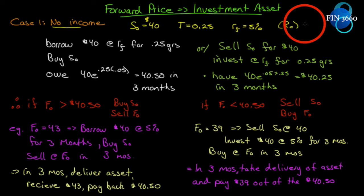We're setting up an arbitrage argument. With arbitrage, we borrow on one side and buy on another — we don't want to use any of our own money. We want to structure a deal such that there'll be a riskless profit. We're not digging into our own pocket. We just observe the environment and walk away with free money. That's arbitrage.